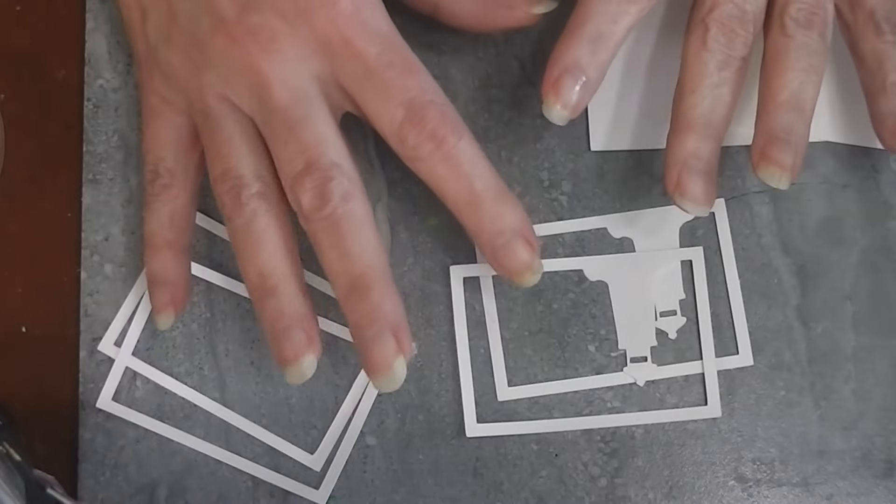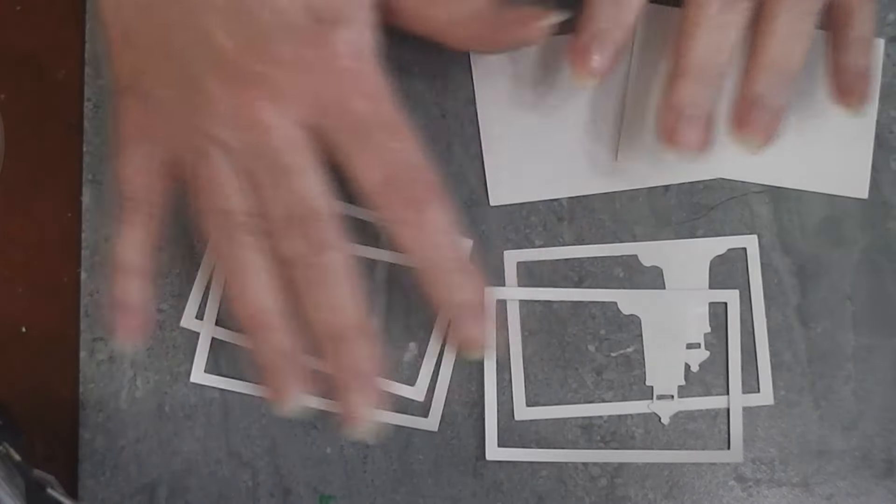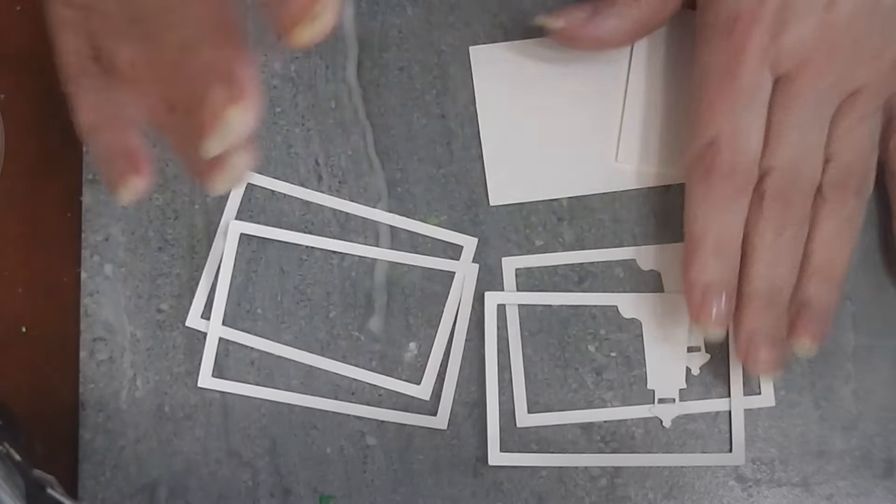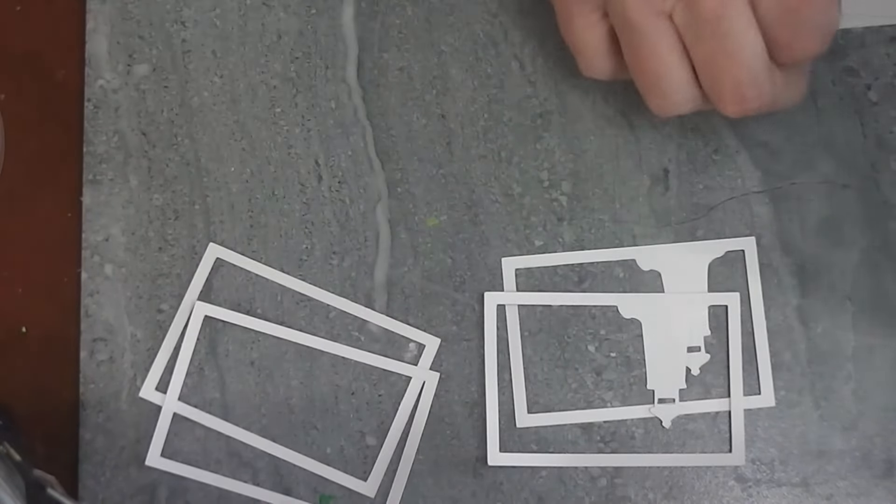We're going to be gluing in two stages. We're going to glue the pairs of pieces together, let that glue dry, and then glue the frame onto the front of this. I'll talk about that as we're working.